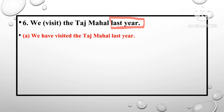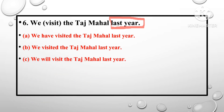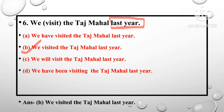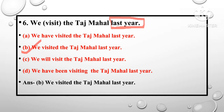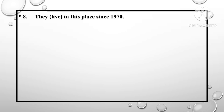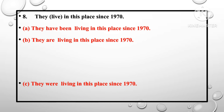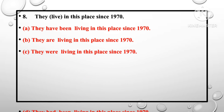Question number 6: 'We visited the town hall last year.' Options: we have visited last year; we will visit last year; we have been visiting last year. Question number 8: 'They live in this place since 1970.' Options: they have been living since 1970; they are living since 1970; they were living since 1970.